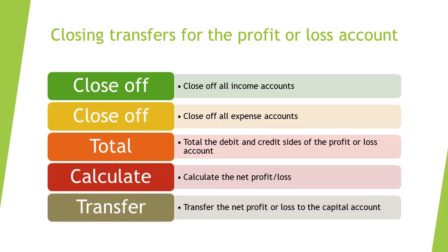In summary, the steps we follow to do all the closing transfers for the profit or loss account are: close off all income accounts, close off all expense accounts, total the debit and credit side of the profit or loss account, calculate the net profit or loss, and transfer the net profit or loss to the capital account.